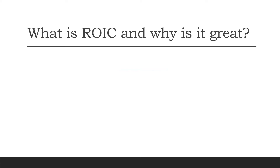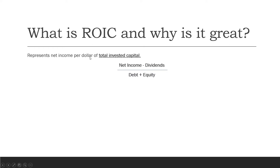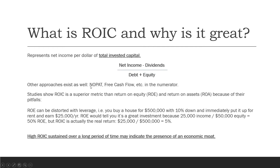So what is ROIC and why is it so good? We're going to broadly define it as net income per dollar of total invested capital. The definition we'll use today is: net income minus dividends, divided by total debt plus total equity. There are many different ways to calculate ROIC — you can use NOPAT, which is net operating profit after tax (earnings after tax but before interest expense), or you can use free cash flow in the numerator. But we're going to take the simple approach: net income minus dividends.